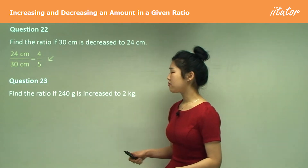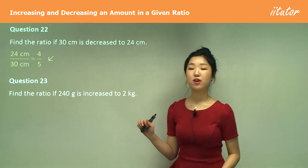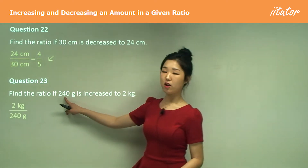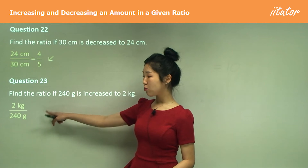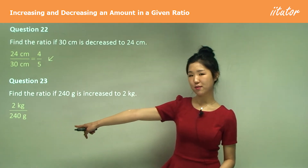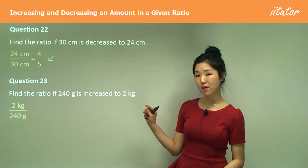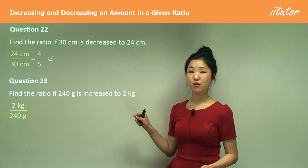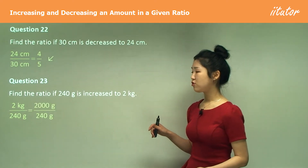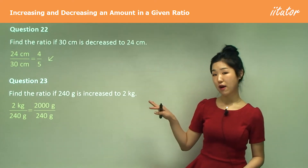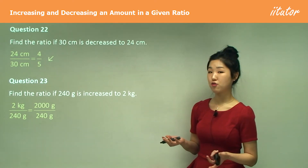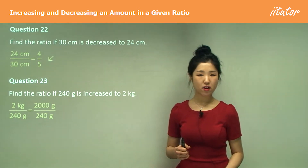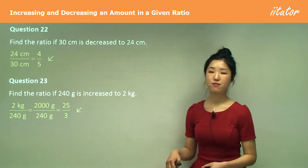Question 23: find the ratio if 240 grams is increased to 2 kilograms. New over old — 2 kilograms over 240 grams. We must change to the same units, so convert 2 kilograms to 2,000 grams, since there are a thousand grams in a kilogram. Then simplify by the common factor to get 25 on 3.